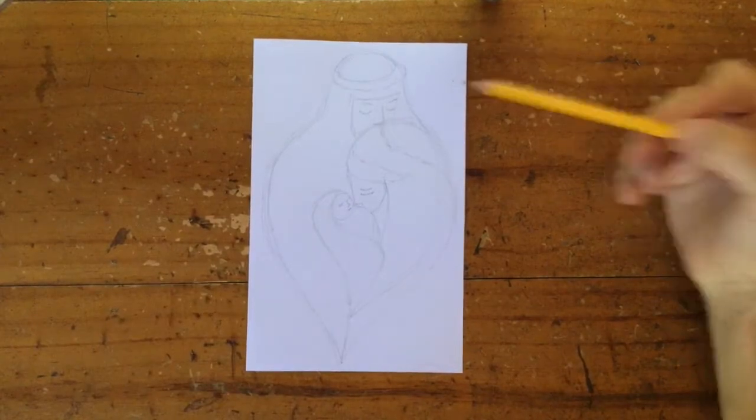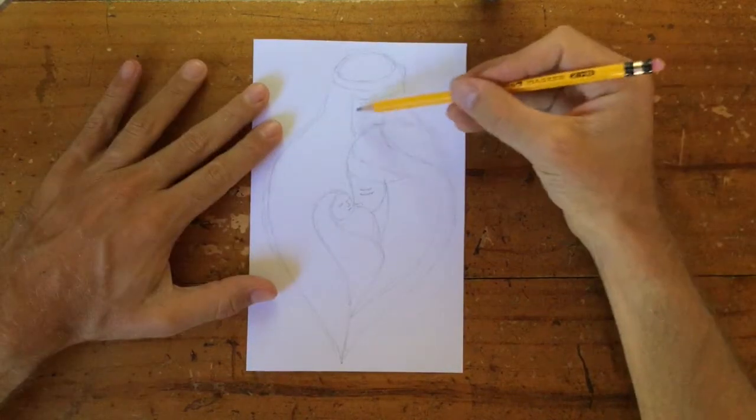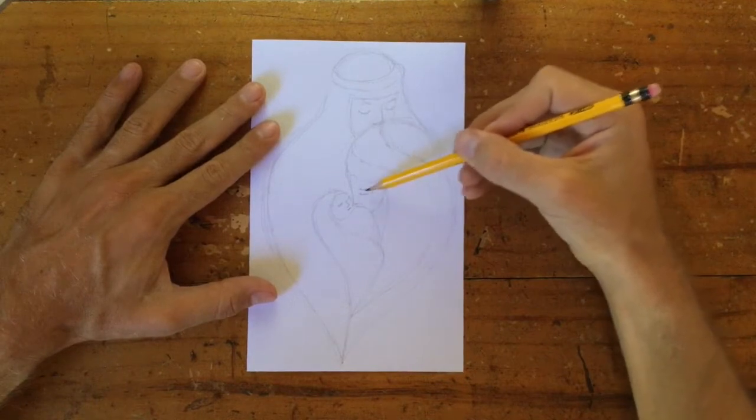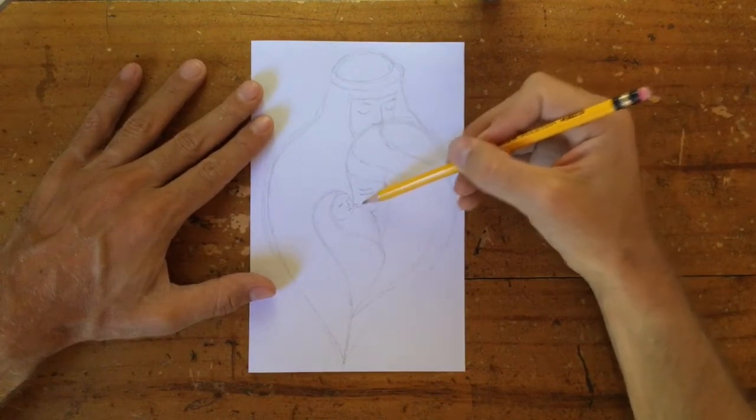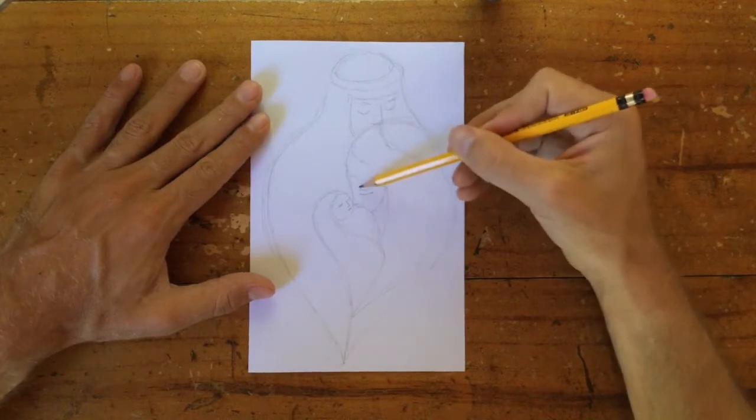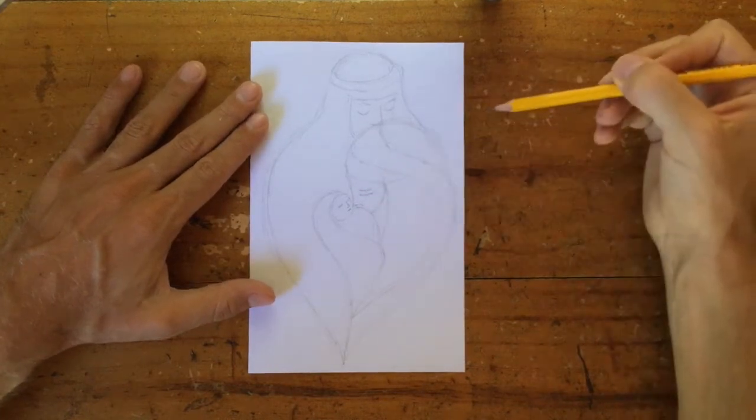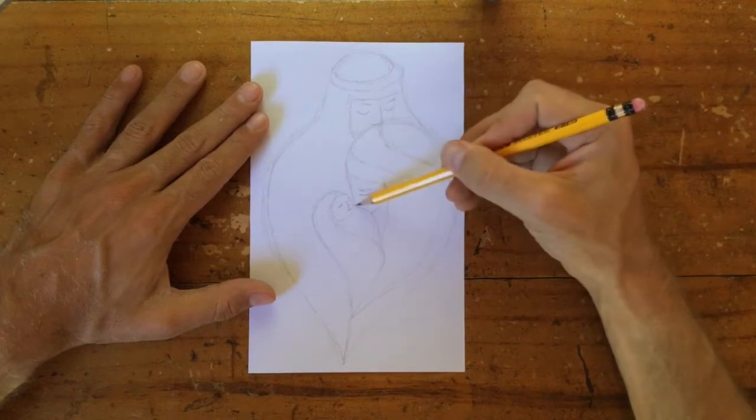So it's worth really taking your time to get this right, so that the faces are the right sizes, those lines. Even though they're quite simple lines for the eyebrow and the eye, the nose, it's important that they're right, that they look right to you, they're at the right angle, so it looks like a face.